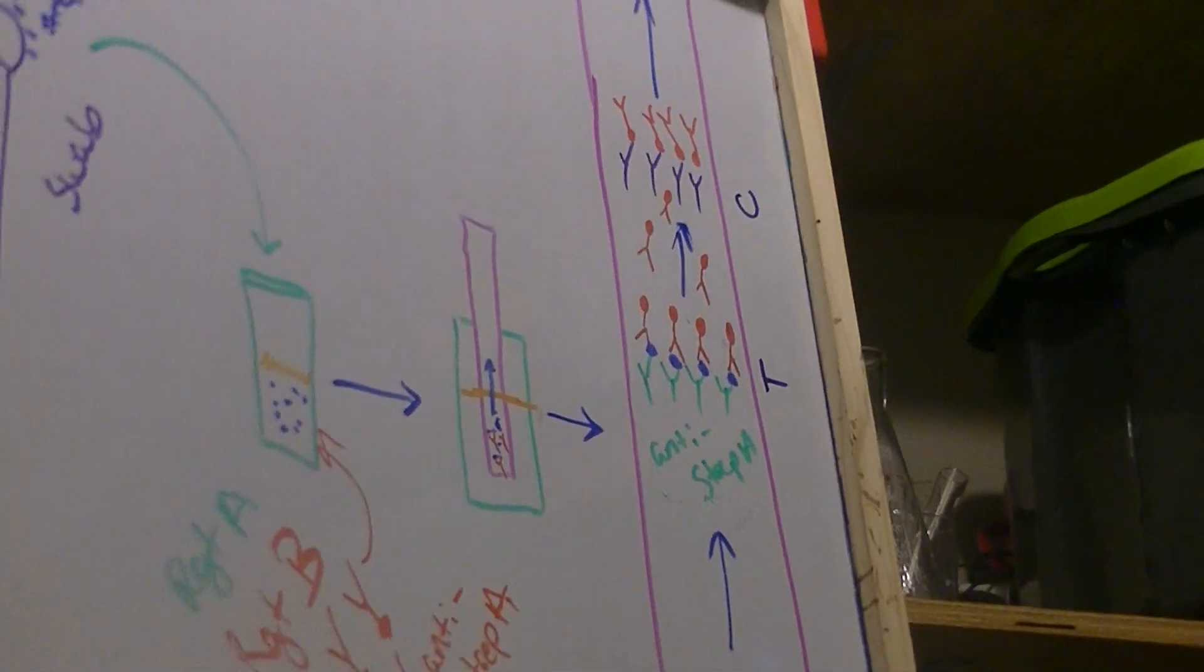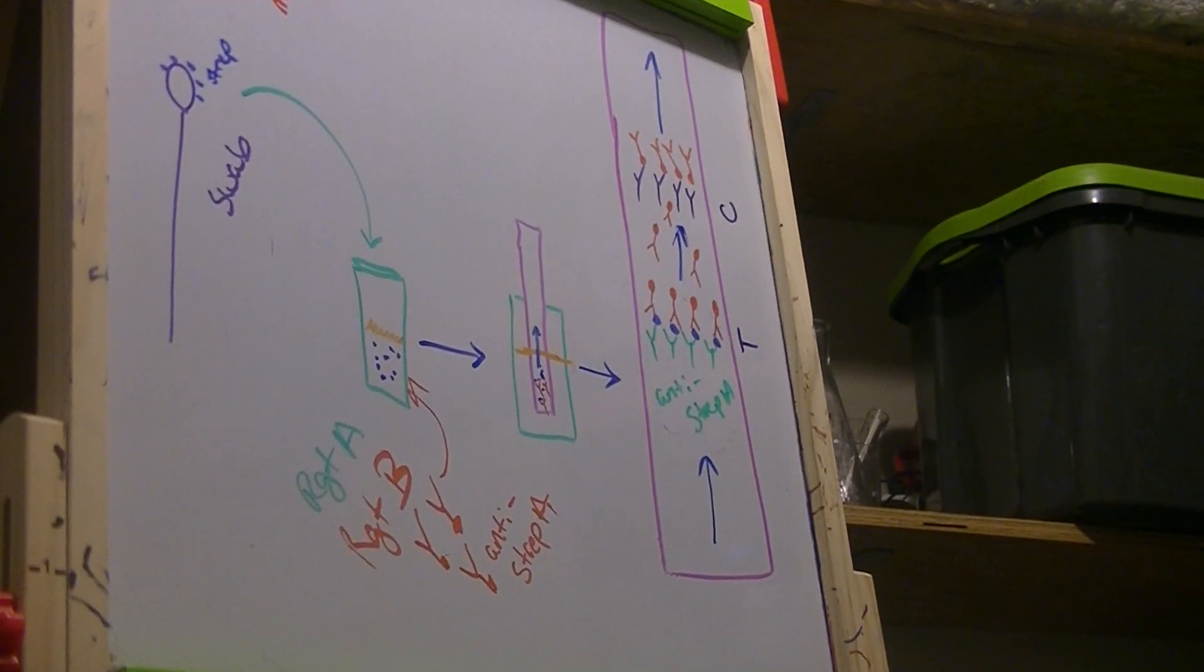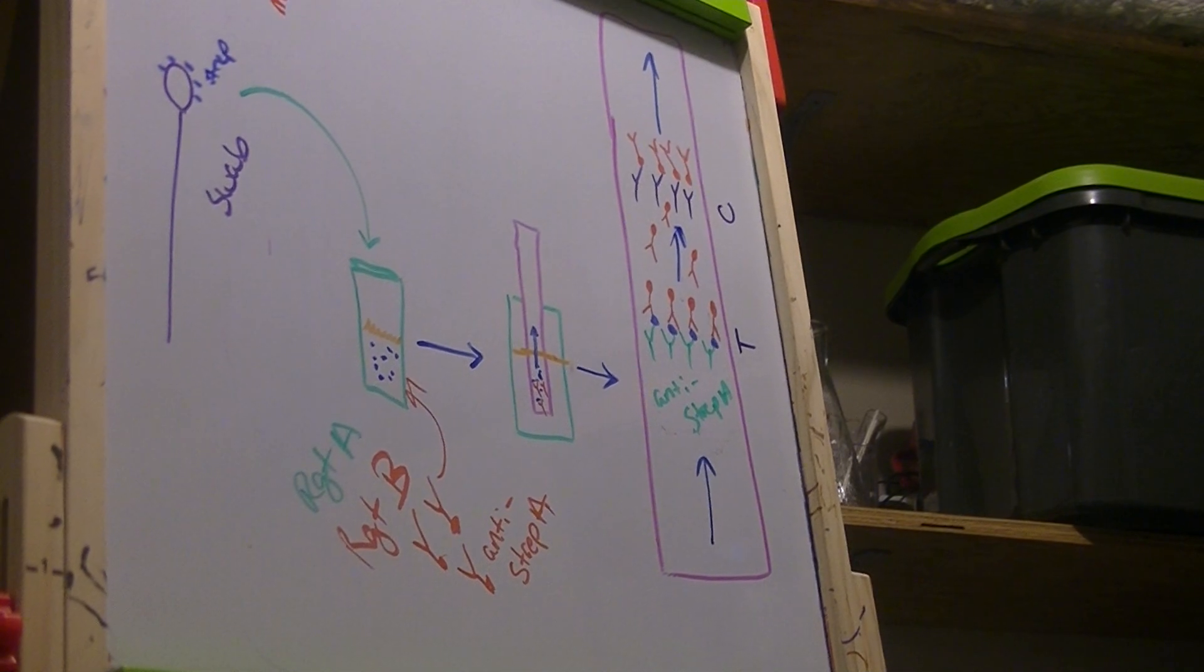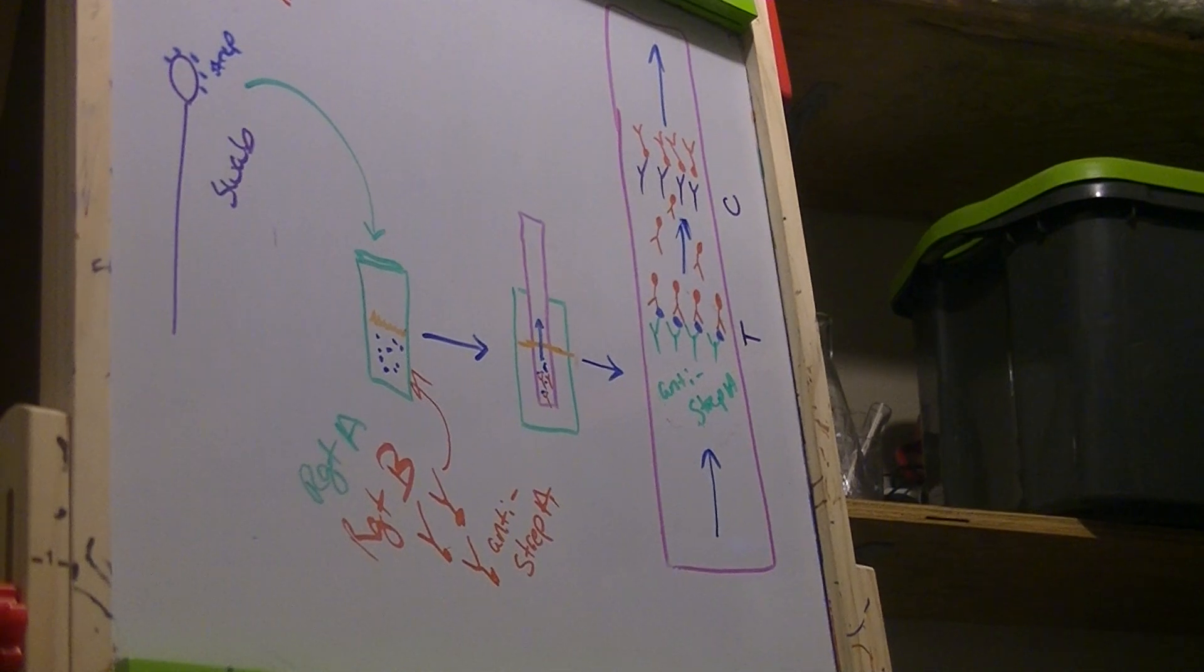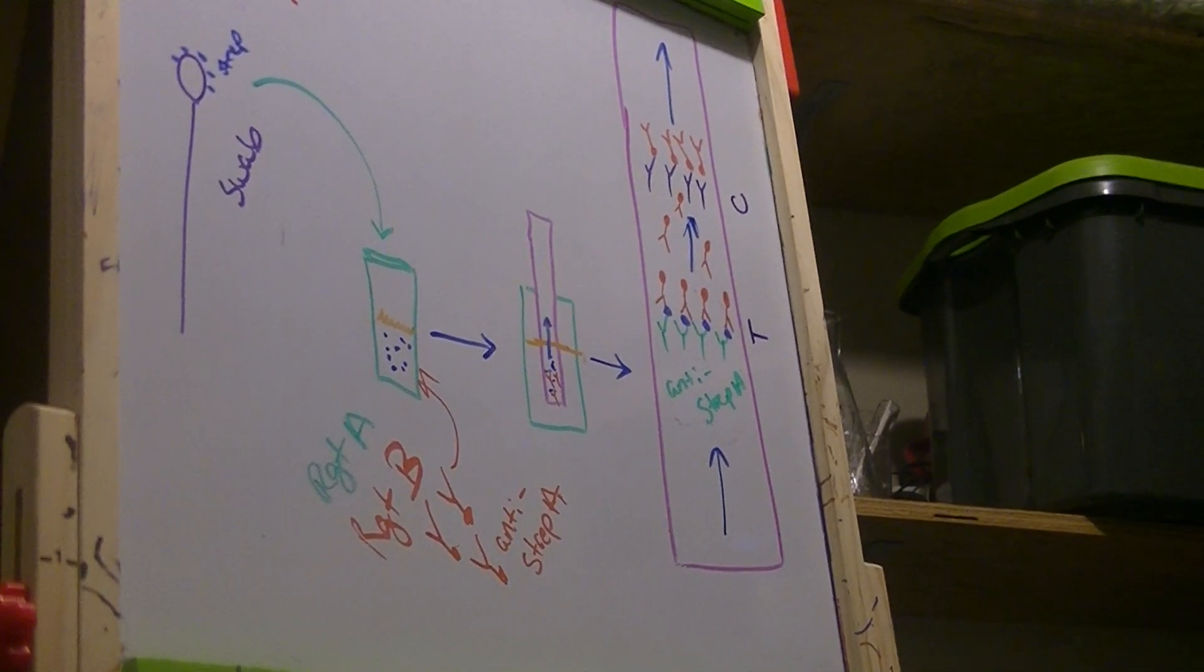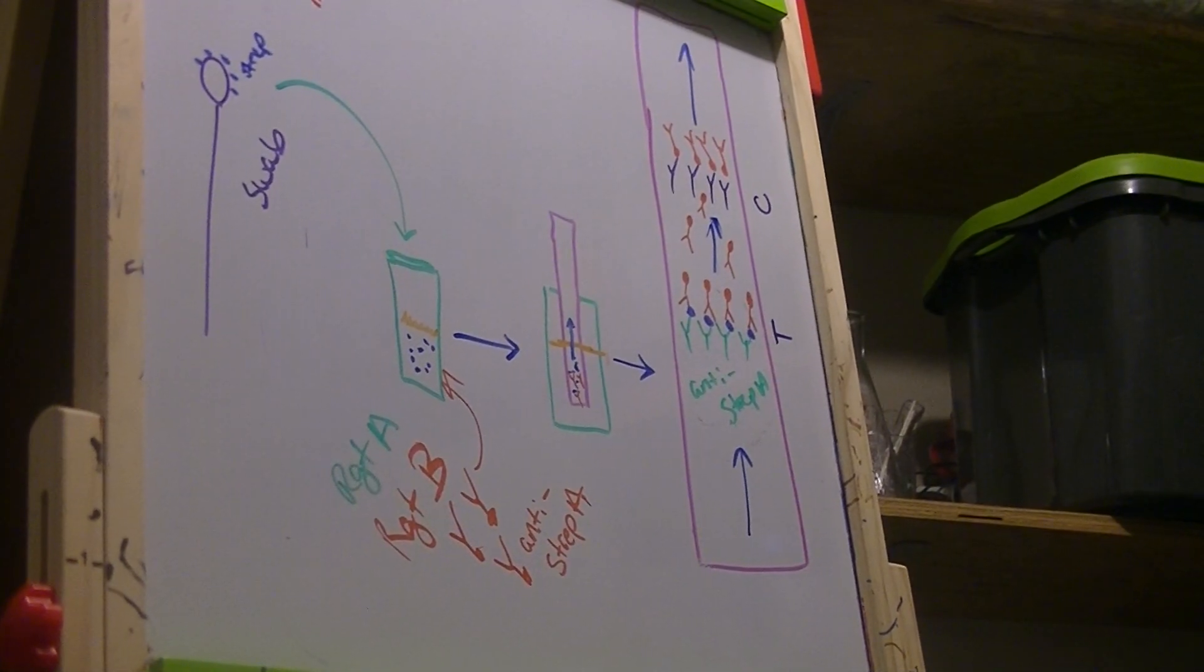So if you see two red lines, you have a positive test. If you have only a control line, you have a negative test. And if you don't see a control line, whether or not you see a line in the testing area, you have to say the test is invalid.